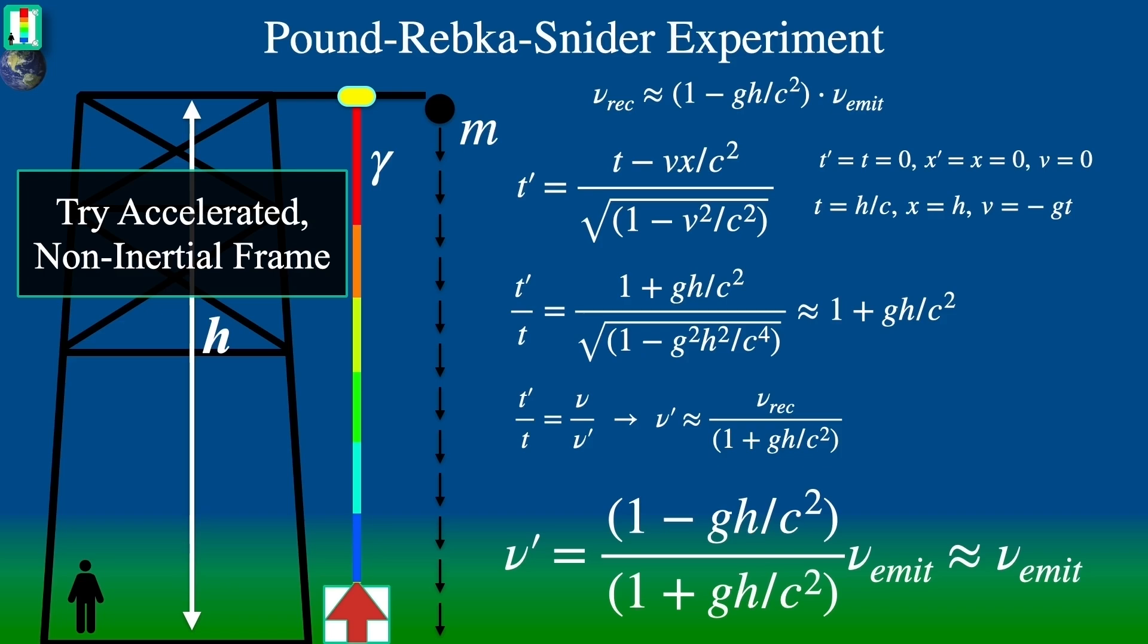This last approximation arises because that ratio in front of ν emit is like 1 minus g squared h squared over c to the fourth. This is what we call a second order effect. Now the first order effect is small, 10 to the minus 15th, so the second order effect would be about 10 to the minus 30th, so we can safely ignore that as completely unmeasurable.